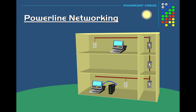For example, let's say you needed this computer up here to be able to access the internet, but for some reason you can't get any network cables or any Wi-Fi signal to reach that computer. In this case, we're going to use powerline networking.